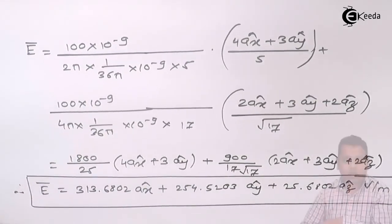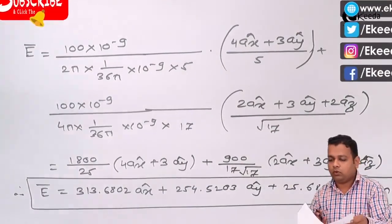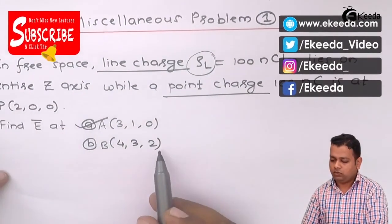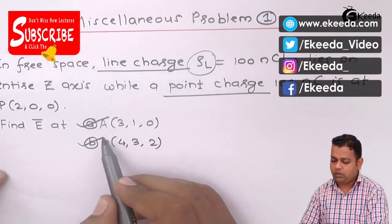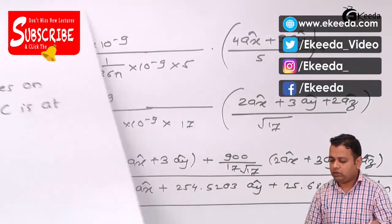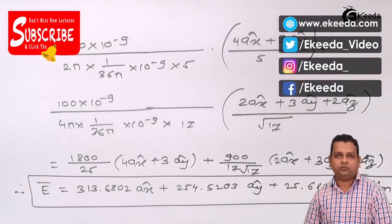This is the required electric field intensity at field point B, located at (4,3,2). Part B is also solved. Thank you.